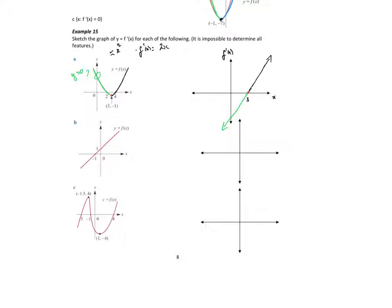Let's try number 2. That's the line of y equals what? That's rise over run — so that's y equals x plus 1. So I know the gradient of this graph — it's 1 everywhere. So the gradient of this graph is 1 everywhere, because that's what the gradient of that line is.